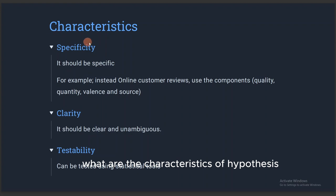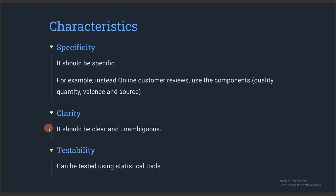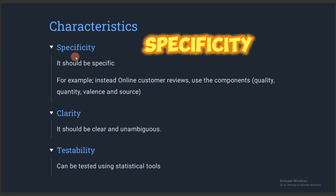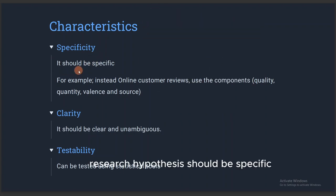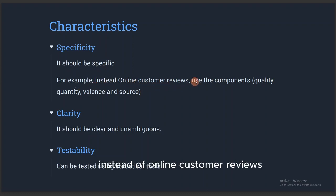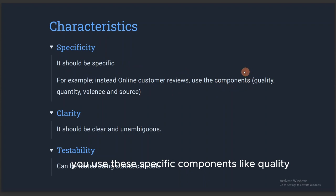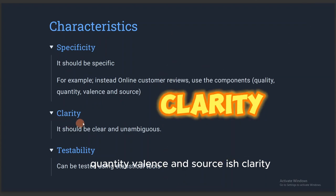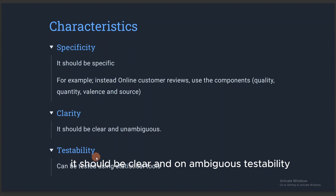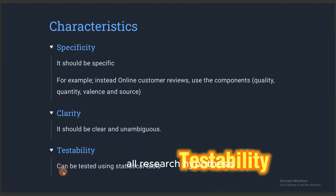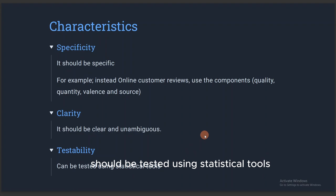What are the characteristics of a hypothesis? There are three characteristics. First is specificity — research hypotheses should be specific. For example, instead of saying 'online customer reviews,' you use specific components like quality, quantity, balance, and source. Second is clarity — it should be clear and unambiguous. Third is testability — all research hypotheses should be tested using statistical tools.